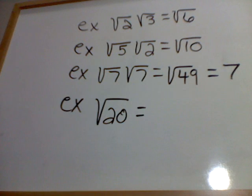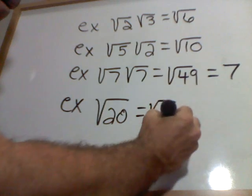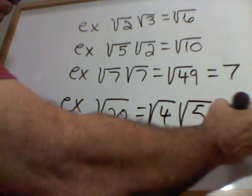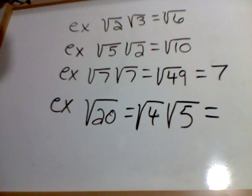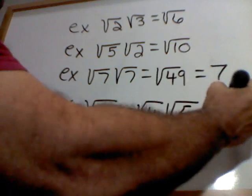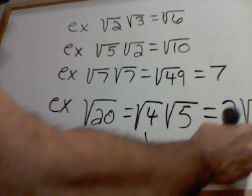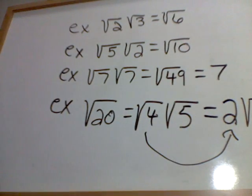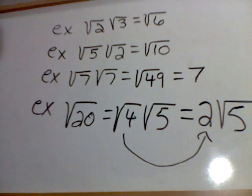Alright, I need a factor of 20 that is a perfect square since that index is a 2. That would be square root of 4 times square root of 5. Because I know the square root of 4 is 2, this final answer is 2 square root of 5.